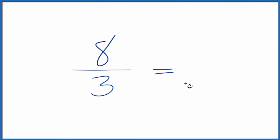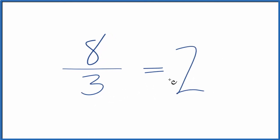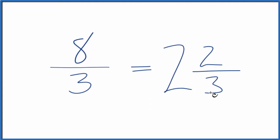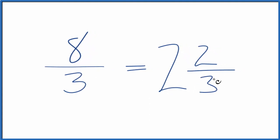We could change it to a mixed number. Right now it's an improper fraction because the numerator is larger than the denominator. So 3 goes into 8 two times with 2 left over. Bring the denominator across. We have 2 and 2 thirds. That's the mixed number for the fraction 8 thirds.